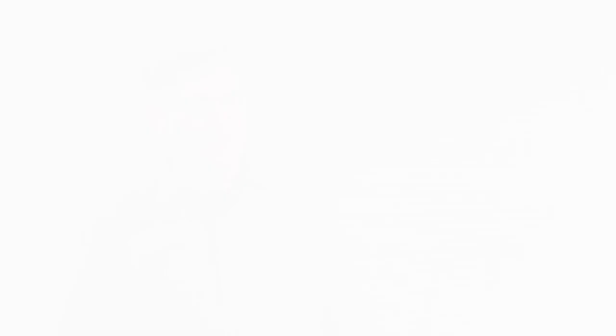The reason for this is that the funding model provides only a small proportion of these machines for the national merit-based allocation, and that is a problem. And I'm pleased to say that we're making some progress towards resolving this, but much more work needs to be done.